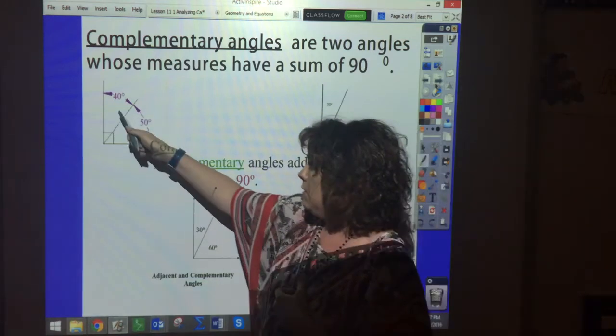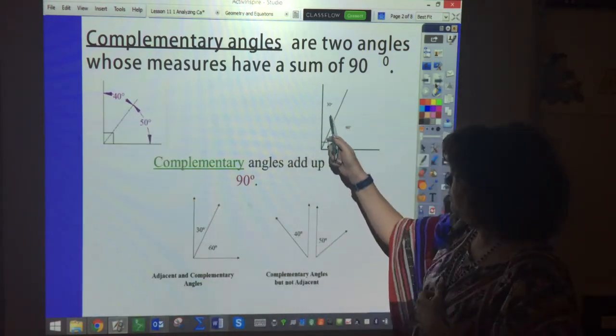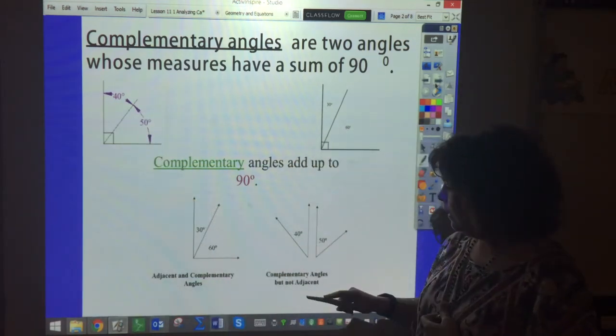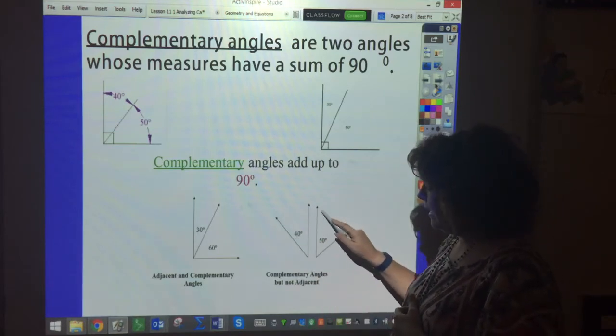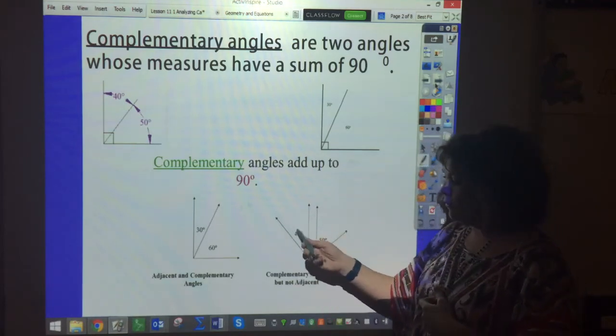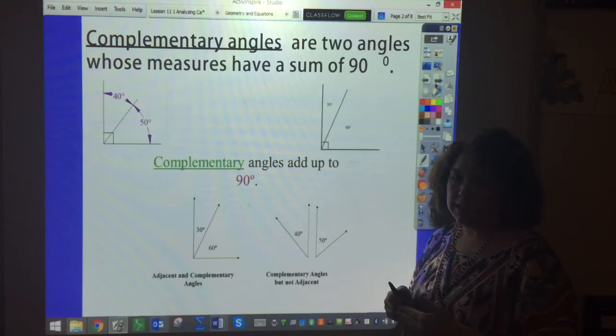So it might be two like this, could be a 30-60, could be two angles but you're told that they're complementary, they're just not next to each other.